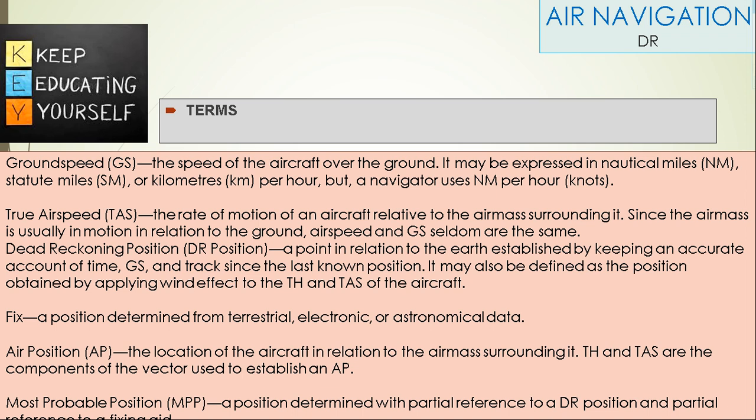Ground Speed: The speed of the aircraft over the ground. It may be expressed in nautical miles, but a navigator uses nautical miles per hour, i.e. knots.